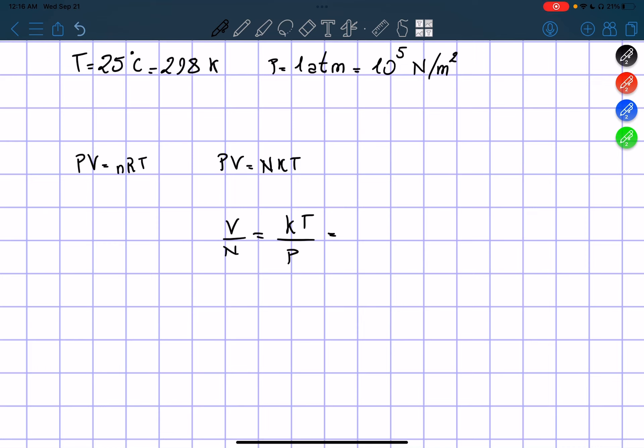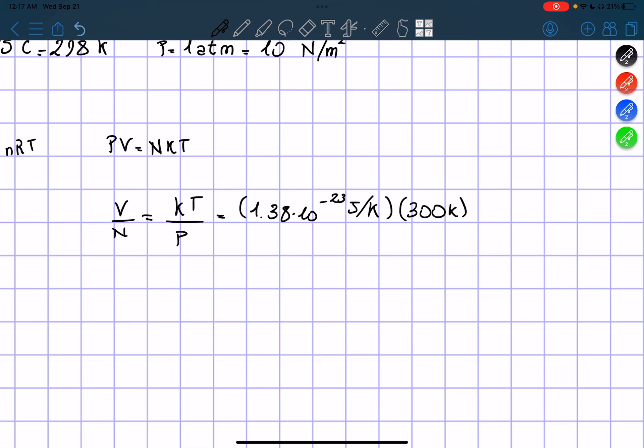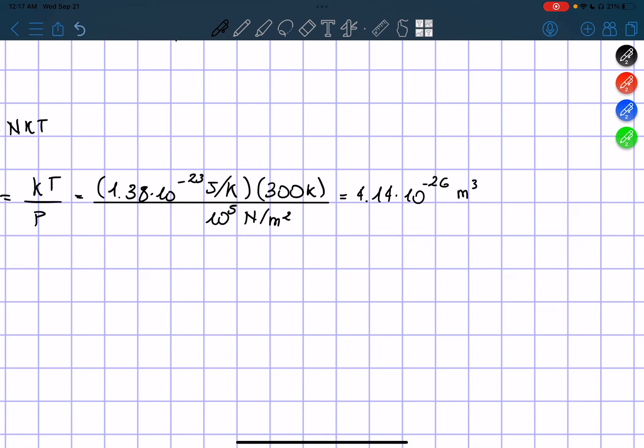Which is equal to what? Well, k is equal to 1.38 times 10 to the power of negative 23 Joules per Kelvin. Temperature is 300 Kelvin over the pressure that we said is equal to 10 to the power of 5 Newton per meter squared. So if we just plug in a calculator, we have 1.38 times 10 to the power of negative 23 times 300 divided by 10 to the power of 5. We get 4.14 times 10 to the power of negative 26, and this is actually meter cubed per molecule.